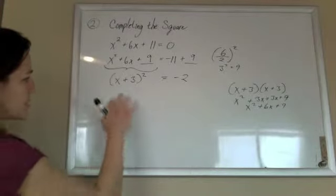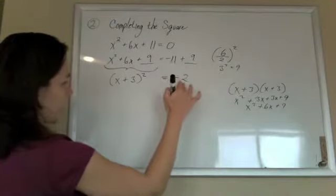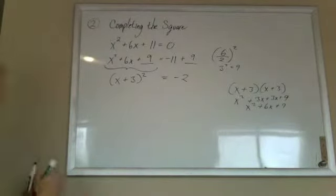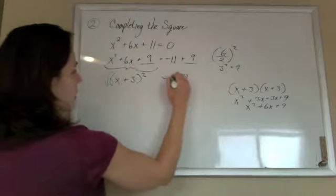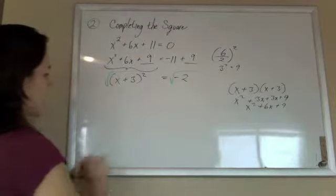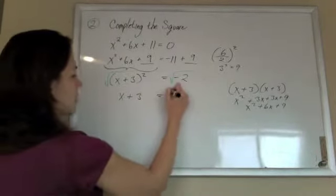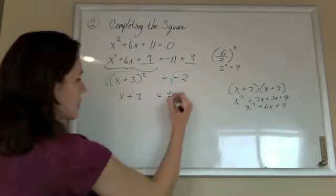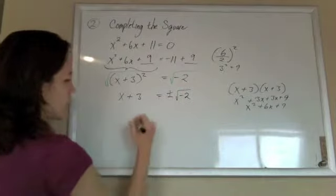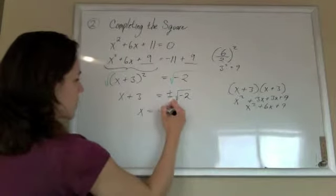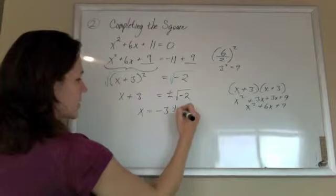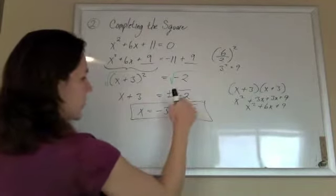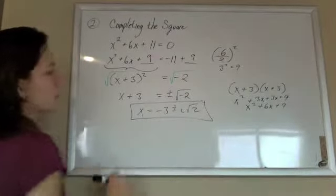Now the whole reason this helps us is now we can take the square root of both sides. So if I take the square root of both sides, I get x plus 3 equals plus or minus—every time you take the square root, you've got to have that plus or minus—square root of negative 2. So x equals negative 3 plus or minus i root 2. And because it was imaginary, I had to pop that i out. But that is the gist.